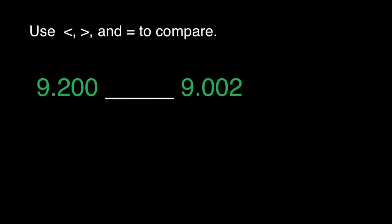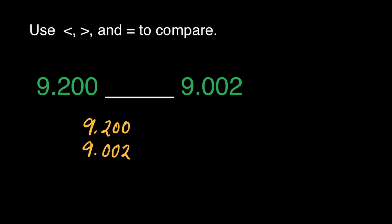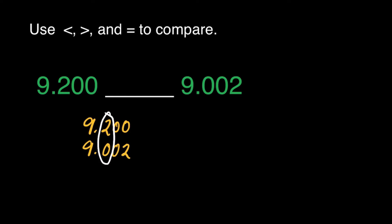Now for the second question: 9 and 200 thousandths ___ 9 and 2 thousandths. Let's align these decimals by writing them again — 9 and 200 thousandths, and 9 and 2 thousandths. Starting from the left, let's identify the first place where the digits differ. We can see that in the tenths place the digits differ, so we can write 2 is greater than 0. This also applies to our question: 9 and 200 thousandths is greater than 9 and 2 thousandths.